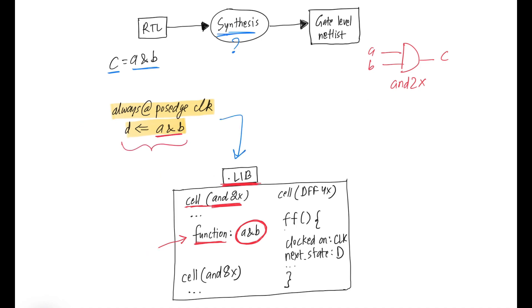So it will go looking in the .lib. It will find the AND gate based on the function A and B. So let's say for the AND gate, it ends up picking a cell called AND2X.